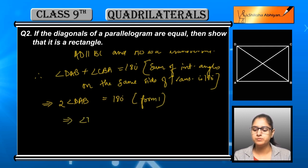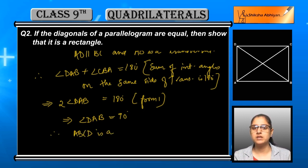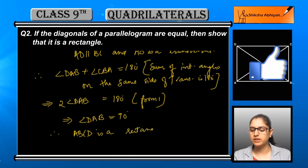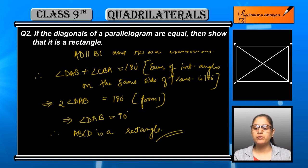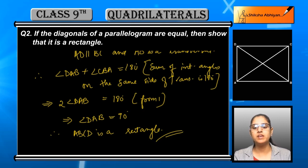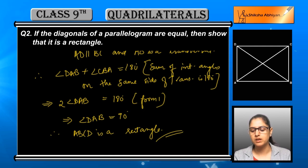Since angle DAB plus angle CBA equals 180 degrees, and from the congruence we know angle DAB equals angle CBA, we get twice of angle DAB equals 180 degrees. Therefore, angle DAB is equal to 90 degrees.